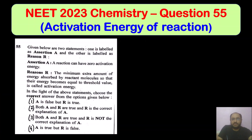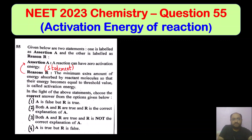Given below are two statements — one is assertion, another is reason. The assertion is: a reaction can have zero activation energy. Assertion is a statement. The reason is the explanation for the given statement. Reason given is: the minimum extra amount of energy absorbed by the reactant molecules so that the energy becomes equal to the threshold value is called the activation energy.